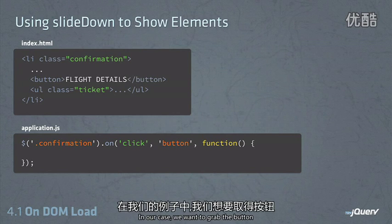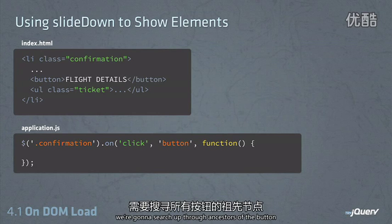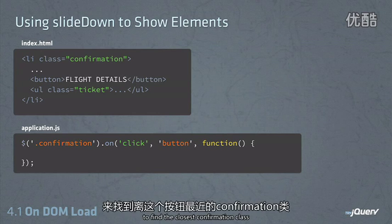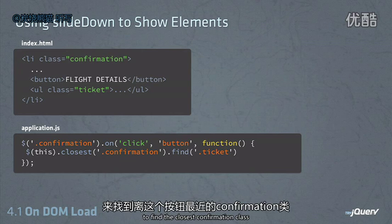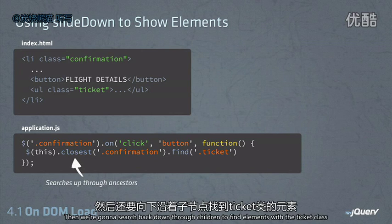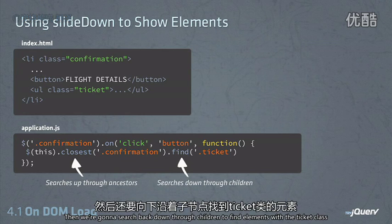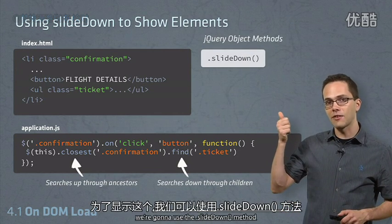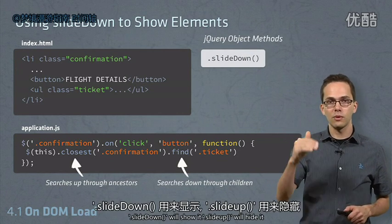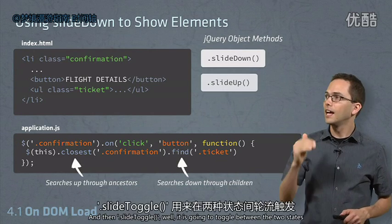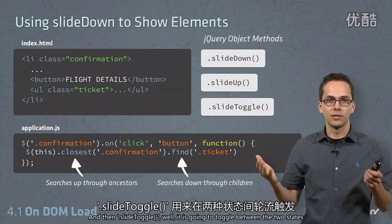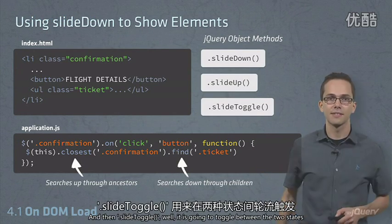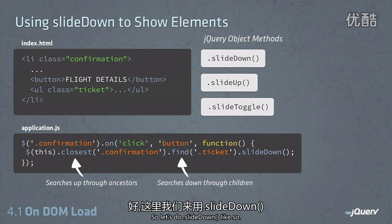In our case, we want to grab the button. We're going to search up through the ancestors of the button to find the closest confirmation class. Then we're going to search back down through the children to find elements with the ticket class. To show this UL, we're going to use the slideDown method. SlideDown would show it, slideUp would hide it, and then slideToggle will toggle between the two states. So let's do slideDown like so.